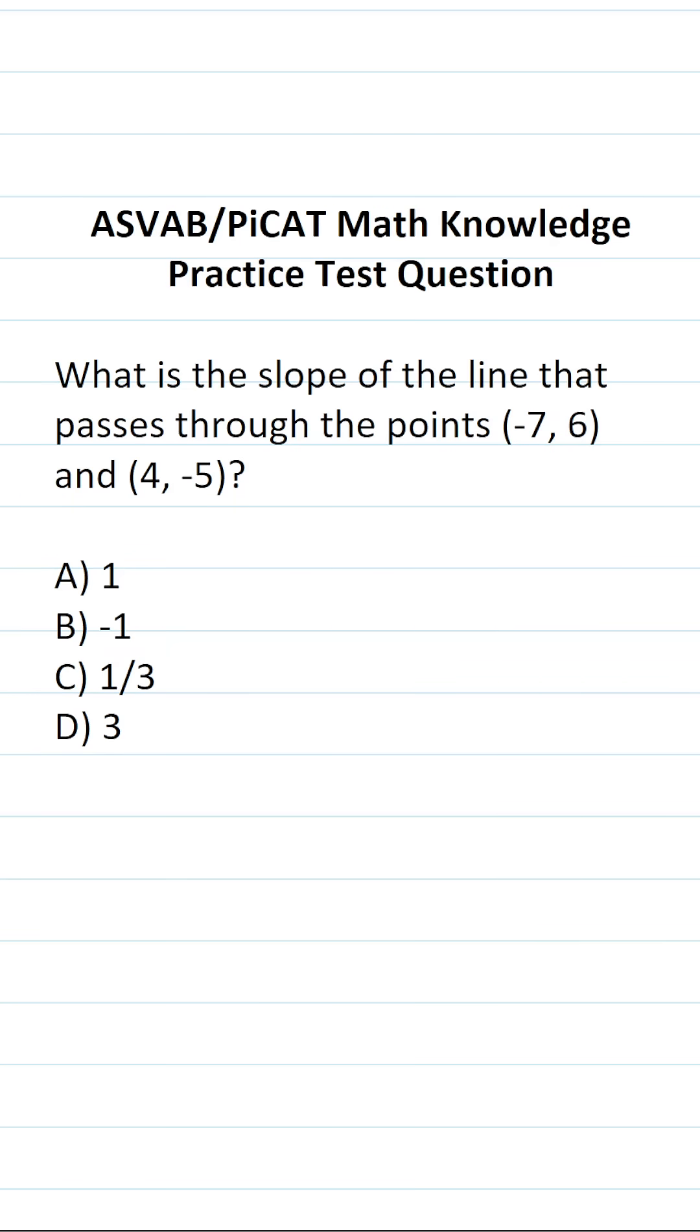This math knowledge practice test question for the ASVAB and PICAT says, what is the slope of the line that passes through the points (-7, 6) and (4, -5)?